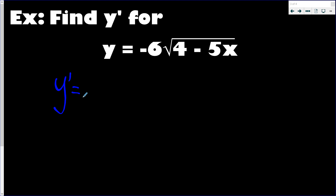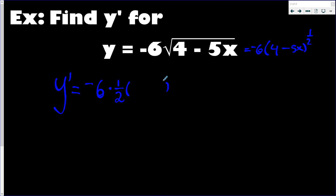So let's do this one mentally. This one has a negative six in front — we just tack that at the beginning. When doing it mentally, I don't worry about what's inside. I think about the derivative of the outside function — just the square root of something. The derivative of something to the one half is one half times that something to the negative one half, times the derivative of that something inside.